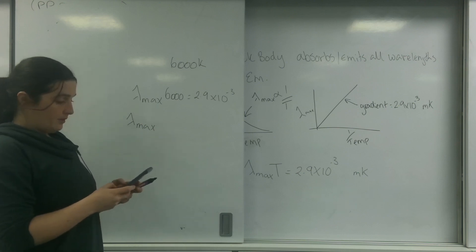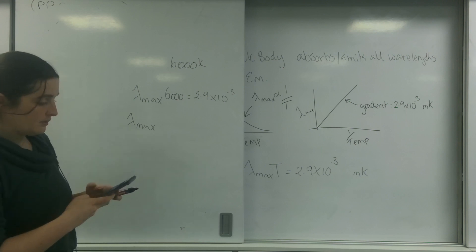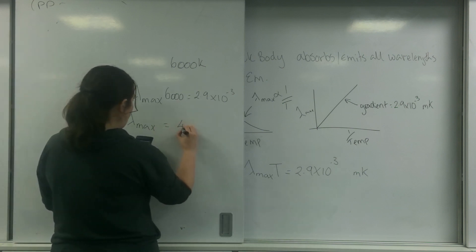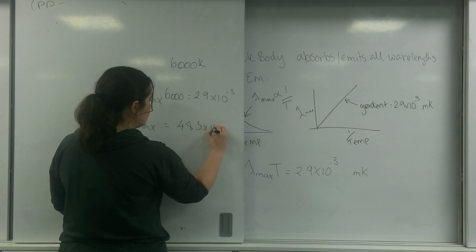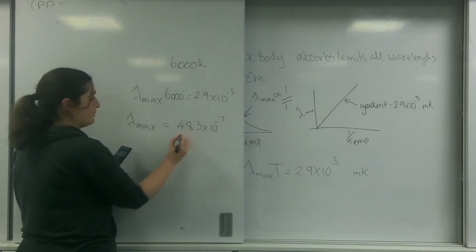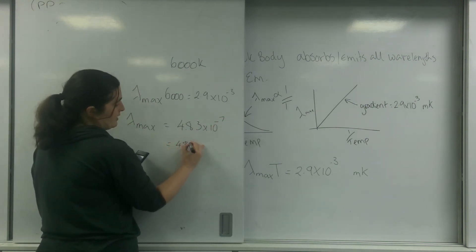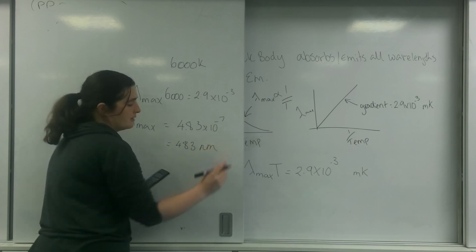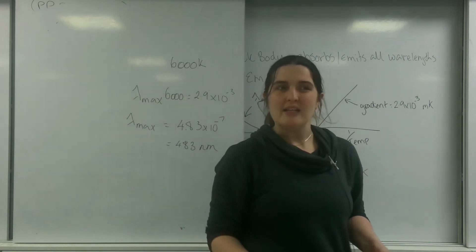So 2.9 times 10 to the minus 3 divided by 6,000 is going to be 4.83 times 10 to the minus 7, which is about 483 nanometers, which is near the blue end of the spectrum.